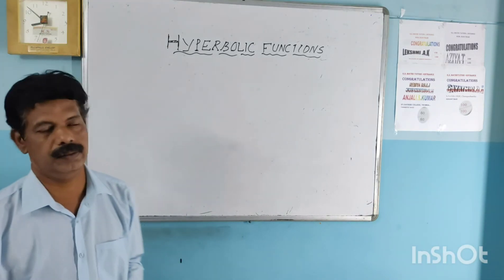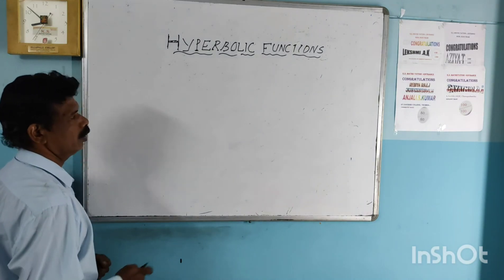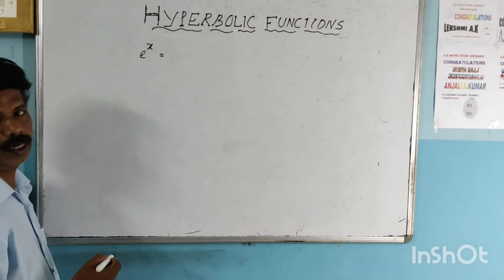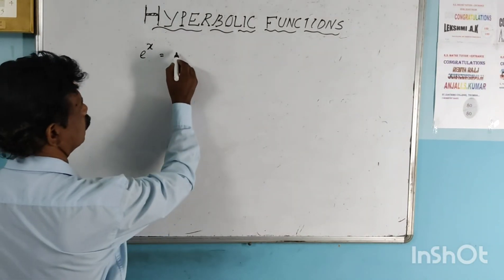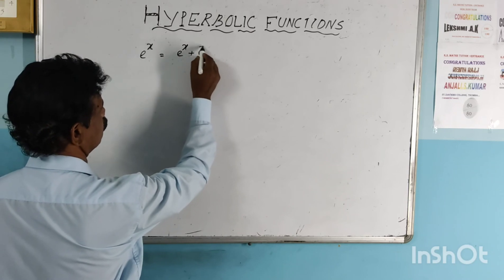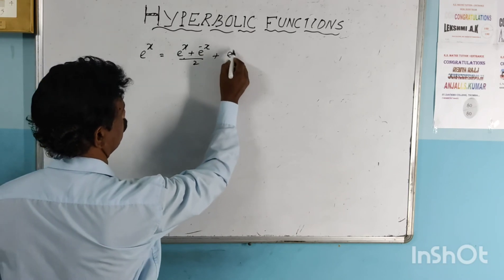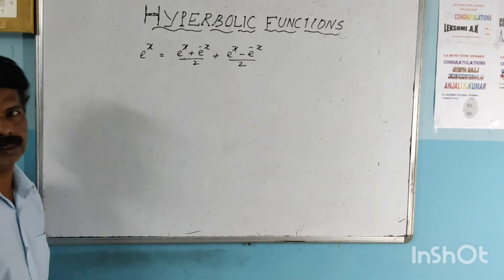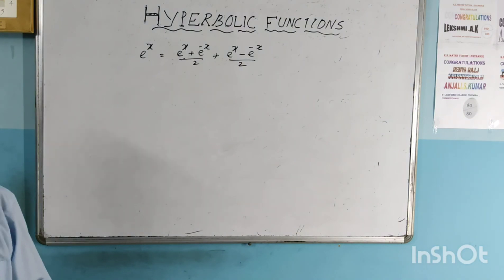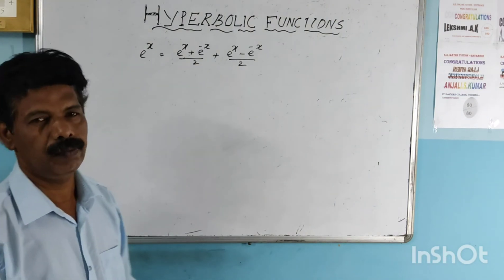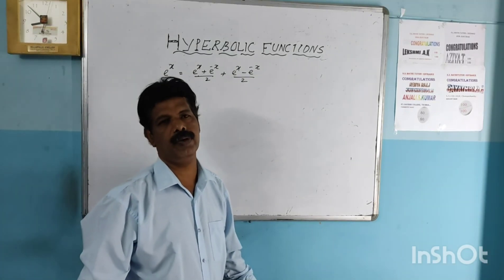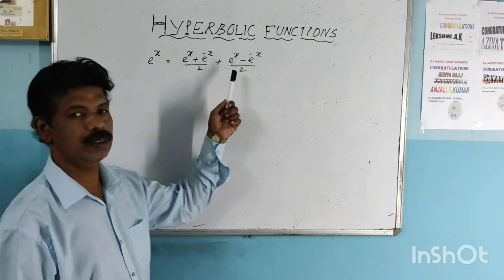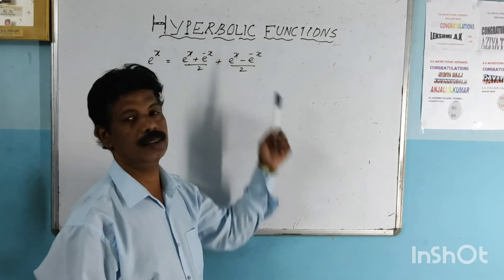What do you mean by hyperbolic function? We can express e raised to x as the sum of even and odd functions. That is, e raised to x equals e raised to x plus e raised to minus x all over 2, plus e raised to x minus e raised to minus x all over 2.